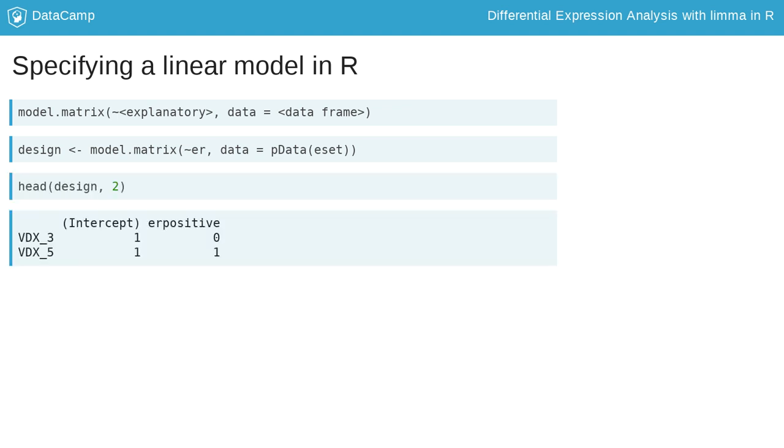Each column of the design matrix corresponds to a coefficient in the linear model. If the sample in a given row is modeled by this coefficient, then it has the value 1 and 0 otherwise. Looking at the first two samples, the intercept is 1 because it is 1 for all samples. The first sample is ER negative and has 0 for beta 1. Conversely, the second sample is ER positive and has 1.